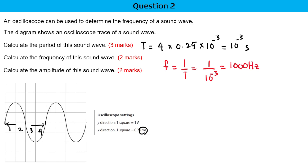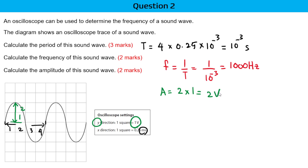Now let's calculate the amplitude. Amplitude is the maximum height or maximum distance of a wave from the equilibrium line. The amplitude is simply 2 squares — this is 1 square, 2 squares. Since each y-direction square is 1 volt, it's 2 into 1, so it should be 2 volts.